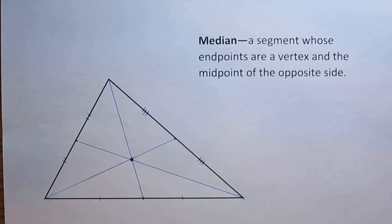And one thing to notice about the centroid is that the centroid is ⅔ of the distance from each vertex to the opposite side's midpoint.